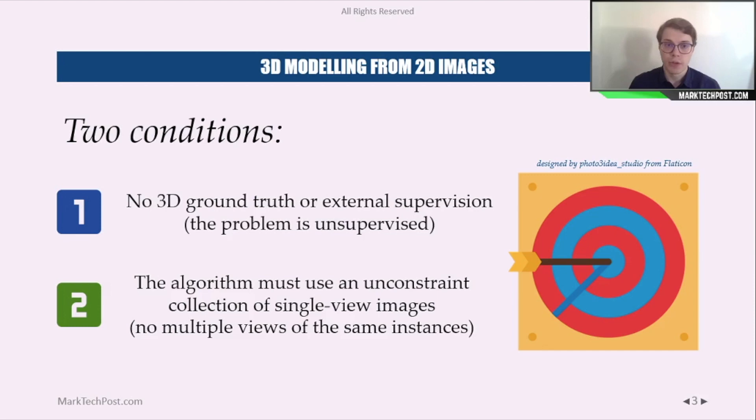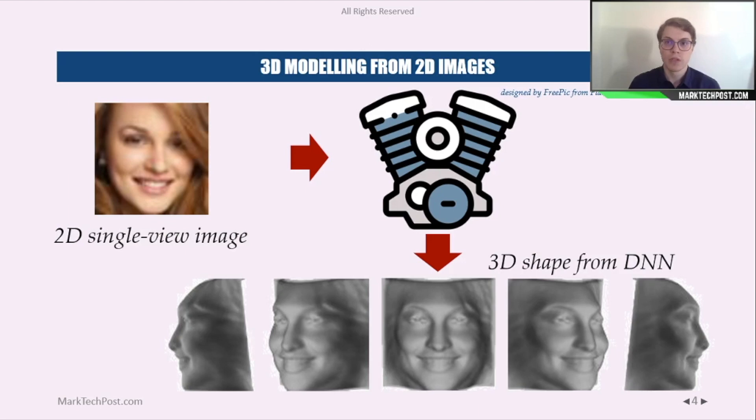Second, the algorithm must be trained using a single view per image. The target model would be then an algorithm capable to return a 3D shape using a single view image as input.